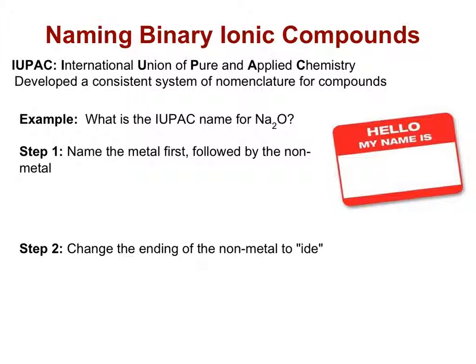Now in terms of going from a formula to a name, what we are going to be focusing on in this course and in any chemistry course that you take from now on is the IUPAC method of naming. IUPAC stands for the International Union of Pure and Applied Chemistry and they developed a consistent system of nomenclature for chemical compounds. This is known worldwide, you could name a compound anywhere in the world with this system and everybody would know what you were talking about.